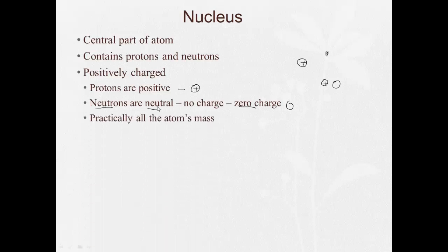The nucleus is pretty much all the atom's mass. We say it's nearly all or practically all. But in reality, for all intents and purposes, it's all the atom's mass. Electrons are so tiny, they don't really account for any of the mass at all.